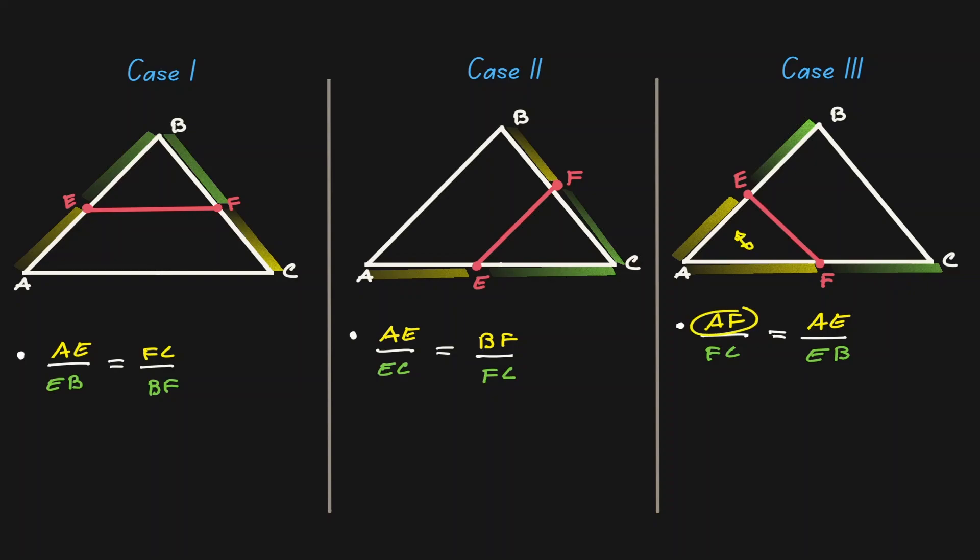And notice again, the numerators are opposite from each other, and the denominators are opposite from each other. And these are the three cases that we should consider when we think about the triangle proportionality theorem.